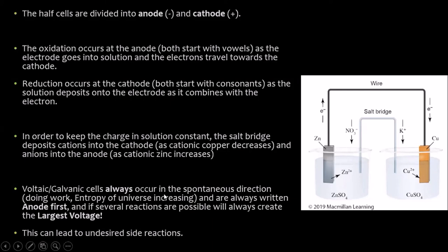Voltaic galvanic cells always operate in the spontaneous direction — they always do work and increase the entropy of the universe. The cell is always written anode first. Half-cells are divided into the anode (negative, oxidation) and cathode (positive, reduction). Memory aids: anode sounds like anion — both start with a vowel, and oxidation occurs at the anode; cathode sounds like cation — both start with a consonant, and reduction occurs at the cathode. Electrons flee the negative anode and flow toward the positive cathode. If the most spontaneous reaction happens to be oxidizing water rather than the metal electrode, that is what will occur — potentially splitting water into hydrogen gas, which can be explosive near a spark.